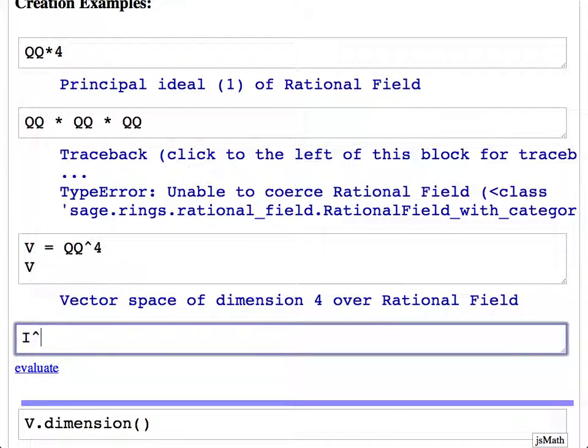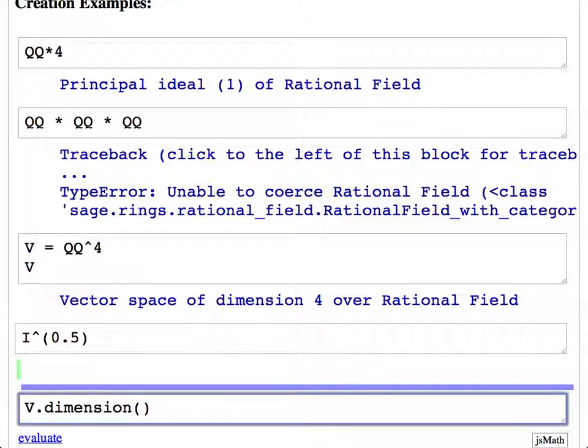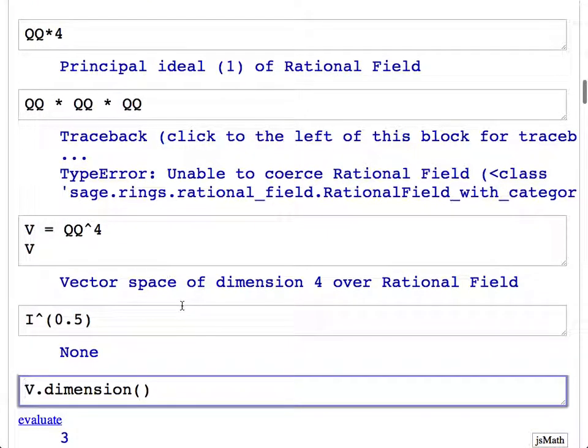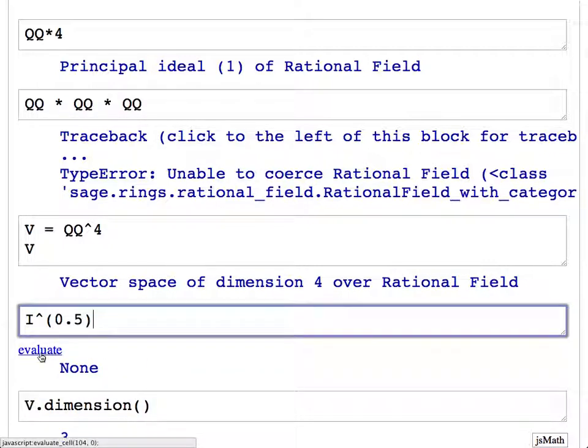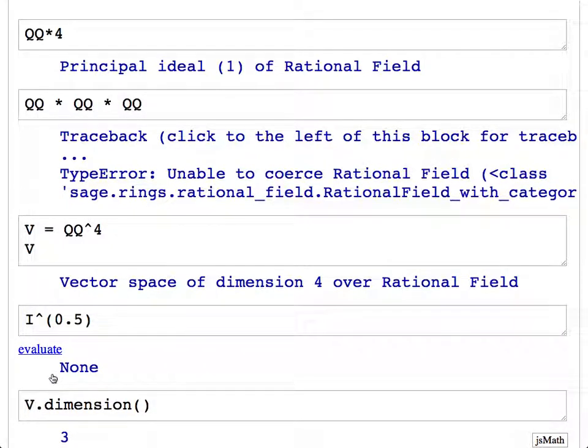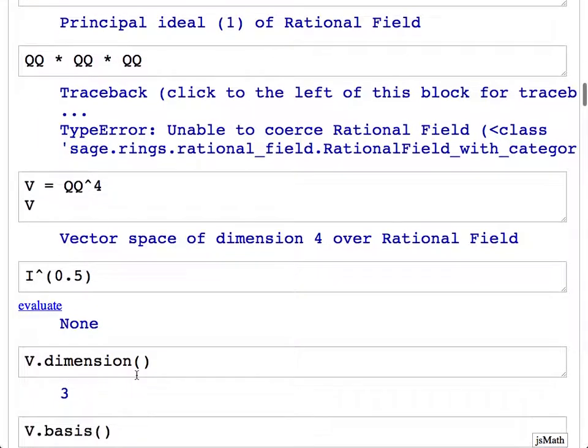You guys are noticing things people haven't noticed before. Somebody noticed yesterday that i to the power of 0.5 is none, which is obviously a horrendous bug. It's been in Sage for maybe two years. It's now fixed and will be in the next version. Andre in this class noticed this bug which no one had ever found before. Thank you.